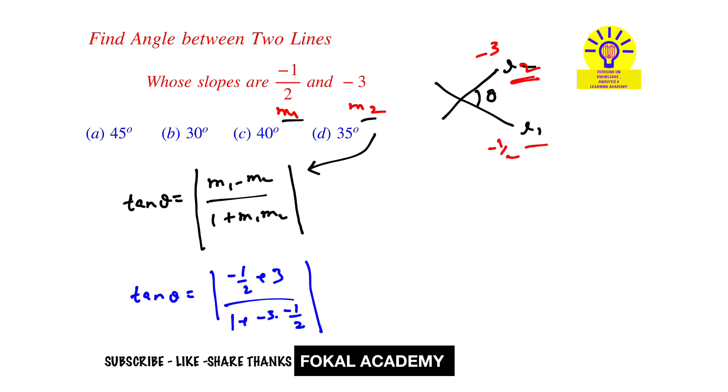That equals tan theta equals modulus of five-halves divided by five-halves, which is nothing but tan theta equals one. So theta equals tan inverse of one, which is nothing but 45 degrees.